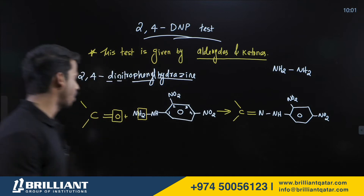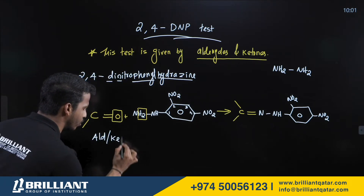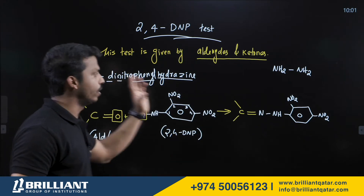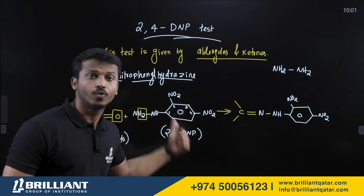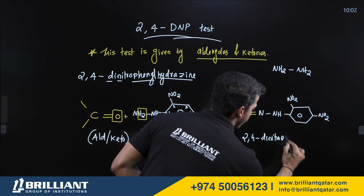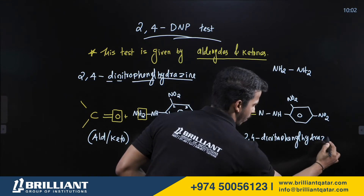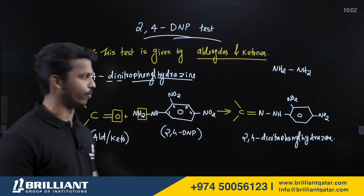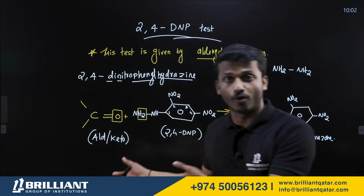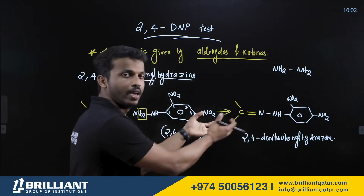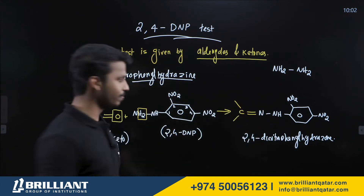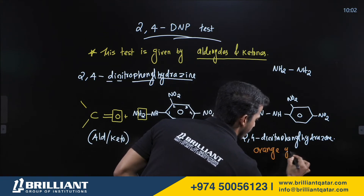When an aldehyde or ketone is treated with 2,4-dinitrophenylhydrazine, the product is known as a 2,4-dinitrophenylhydrazone — the hydrazine is converted to a hydrazone. The observation for this test is that the product has an orange-yellow color.